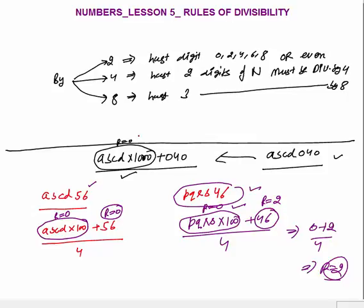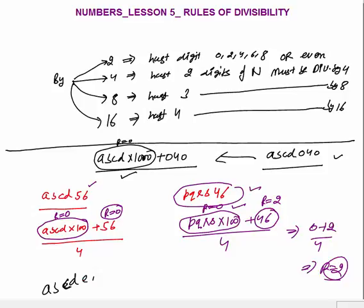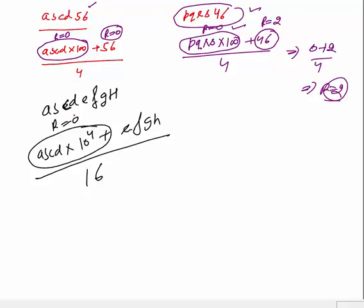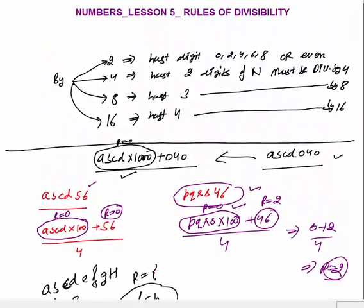No need to cram — you have to understand the concept. Same is for 16: the last four digits of the number must be divisible by 16. Because the previous part will be a multiple of 10,000. For example, take number ABCDEFGH — you can write it as ABCD × 10⁴ + EFGH. If you divide by 16, ABCD × 10,000 is always divisible by 16 because 10,000 is divisible by 16, so there is no remainder. You only need to check the last four digits. If the last four digits are divisible by 16, the complete number is divisible by 16.